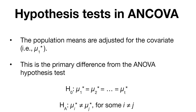Here are the hypothesis tests for analysis of covariance. The ANCOVA hypothesis test is very similar to ANOVA, but the key difference is that the population means are adjusted for the covariate. Instead of just mu1, we write mu1 star — the star indicates we're adjusting the population means based on the covariate. That's really the primary difference from the ANOVA hypothesis test.